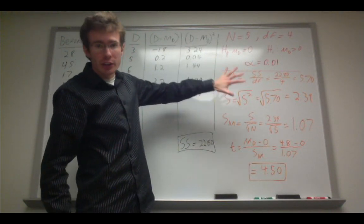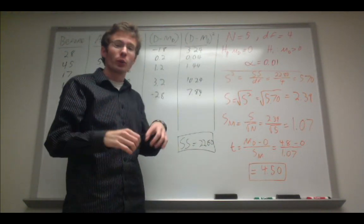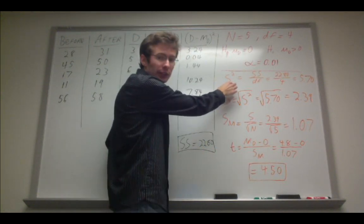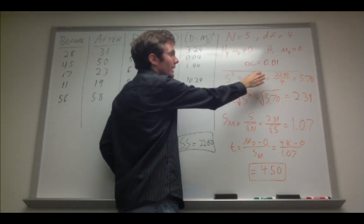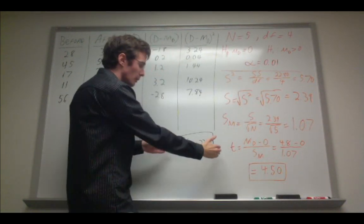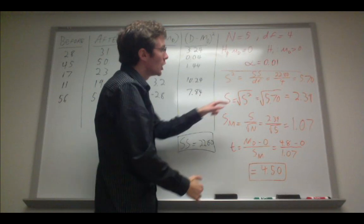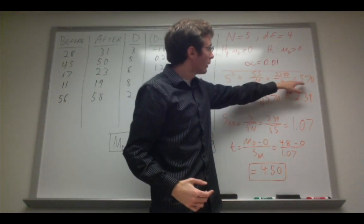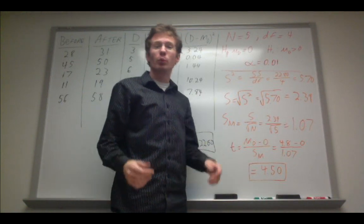In orange is my calculations to get the t statistic for this repeated measures t test. I have my estimate for the variance, or s squared, and that's the sum of squares divided by the degrees of freedom. So I have my sum of squares calculated down here. 22.8 divided by degrees of freedom, which is 4. And so my estimated variance is 5.7.